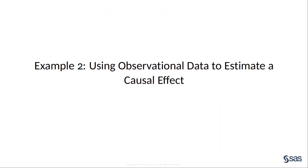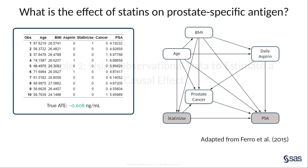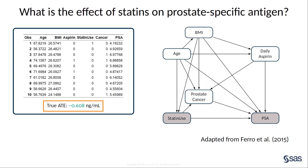Now, let's consider an example in which a PROC CAUSALGRAPH analysis is combined with the CAUSALTRT procedure to estimate a causal effect. This example uses a causal model proposed by Farrow et al. to describe the relationship between statin drugs and prostate-specific antigen. The treatment variable, statin use, is an indicator variable for whether a person is taking a statin. The outcome variable, PSA, is a continuous variable representing the blood concentration of PSA. Because these are simulated data, the true average treatment effect is known to be negative 0.608 nanograms per milliliter.